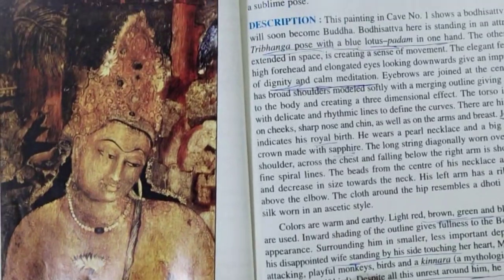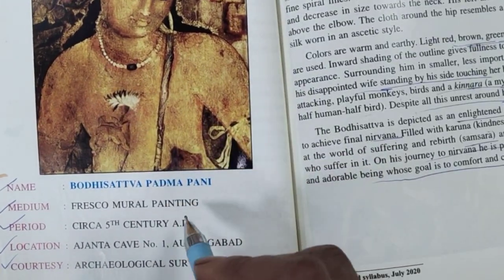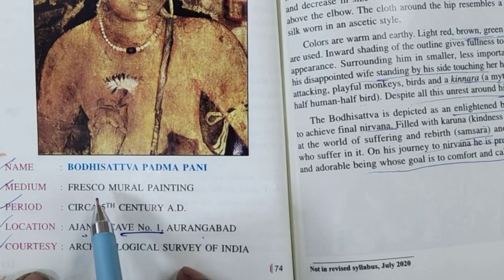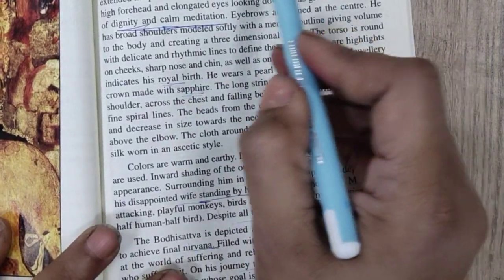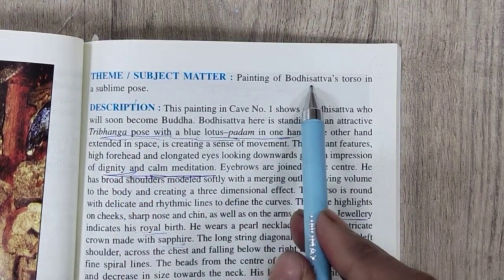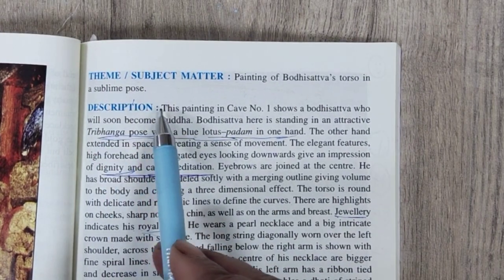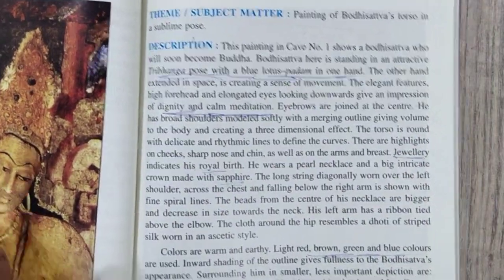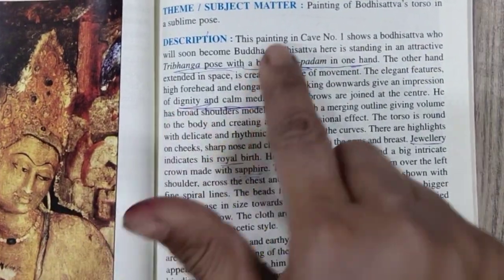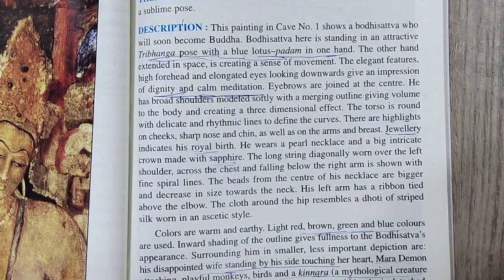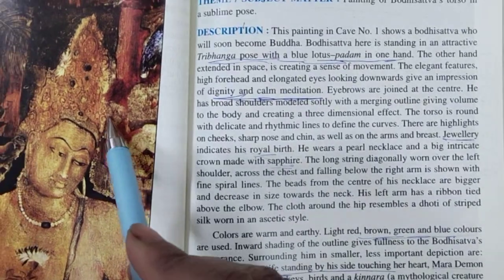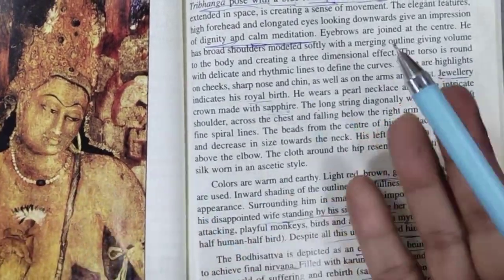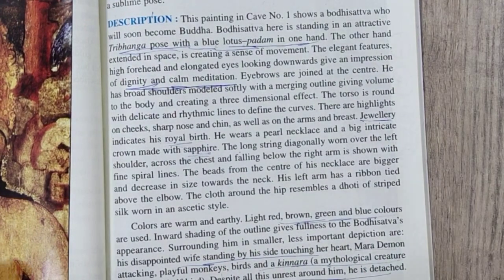The key painting to learn is Bodhisattva Padmapani in cave number 1 of Ajanta, Aurangabad. Courtesy: Archaeological Survey of India. Medium: fresco mural painting. Theme: painting of Bodhisattva torso in sublime pose. For the description, he wears a pearl necklace and a big intricate crown made with sapphire. The long string is diagonally worn over the left shoulder. Describe this painting carefully in your own language.